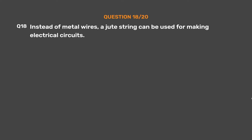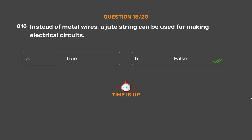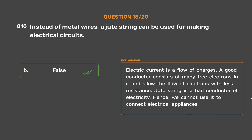Question number 18. Instead of metal wires, a jute string can be used for making electrical circuits. Option A: True. Option B: False. The correct answer is Option B, False. Electric current is a flow of charges. A good conductor consists of many free electrons and allows the flow of electrons with less resistance. Jute string is a bad conductor of electricity, hence we cannot use it to connect electrical appliances.